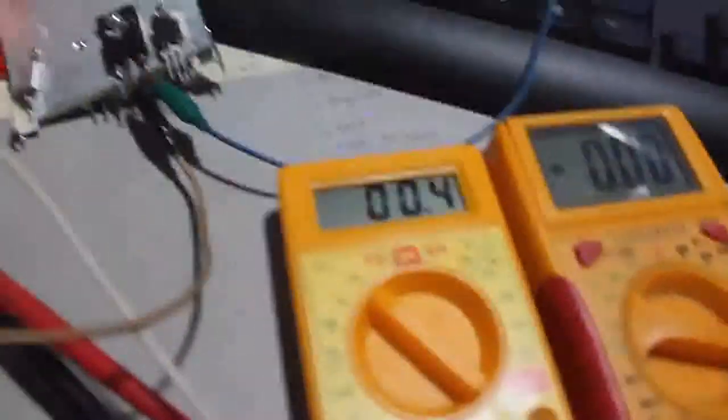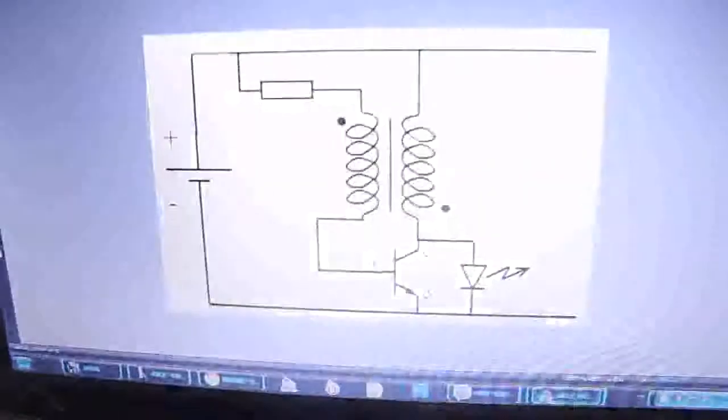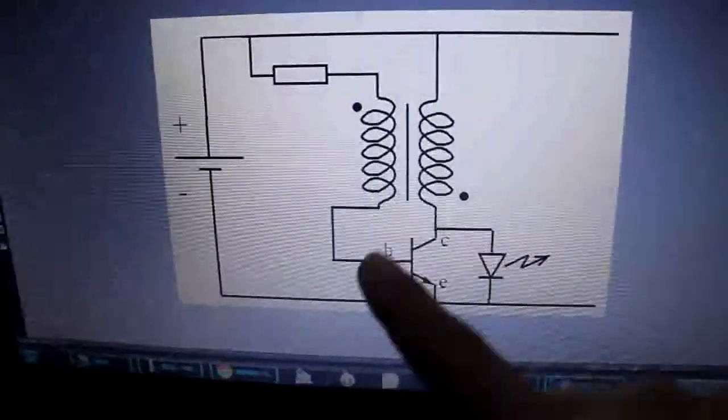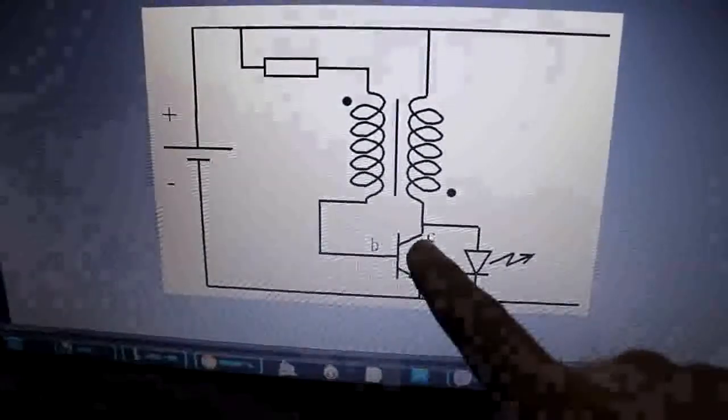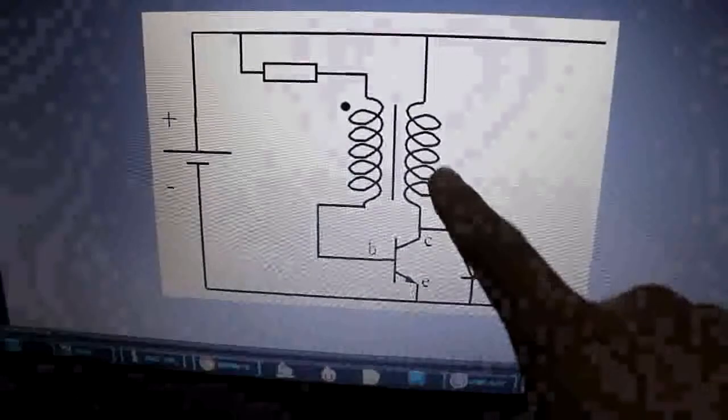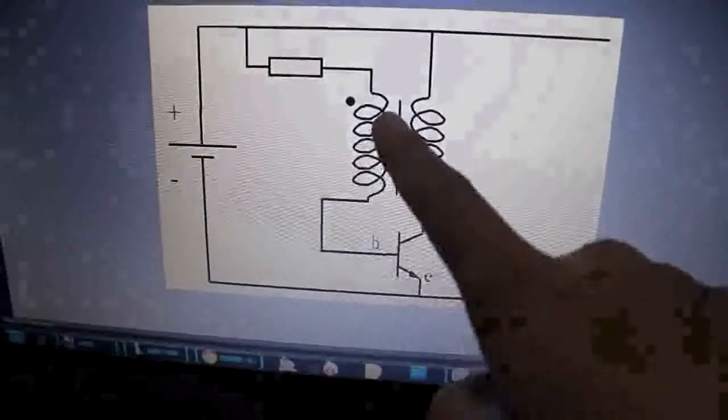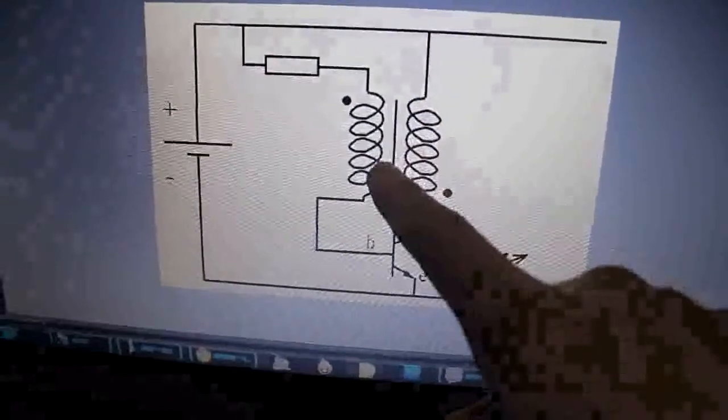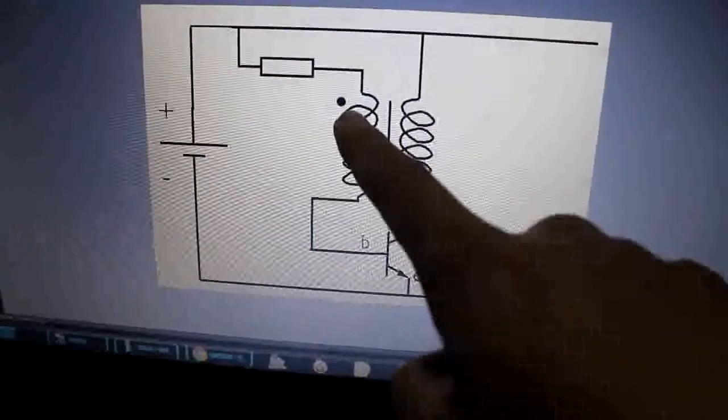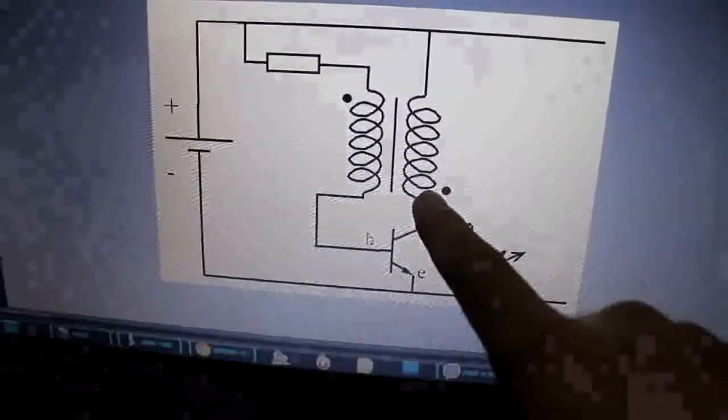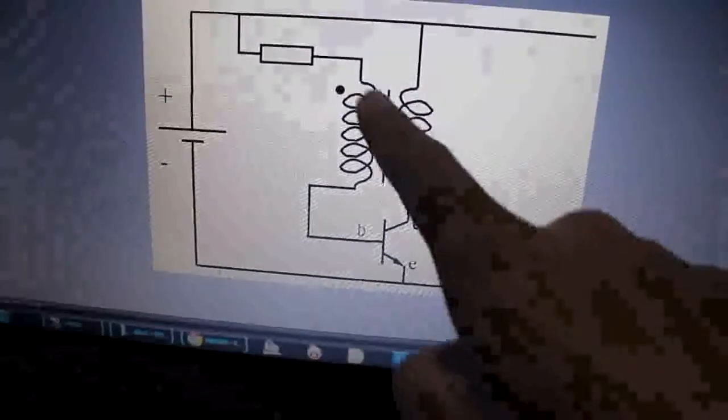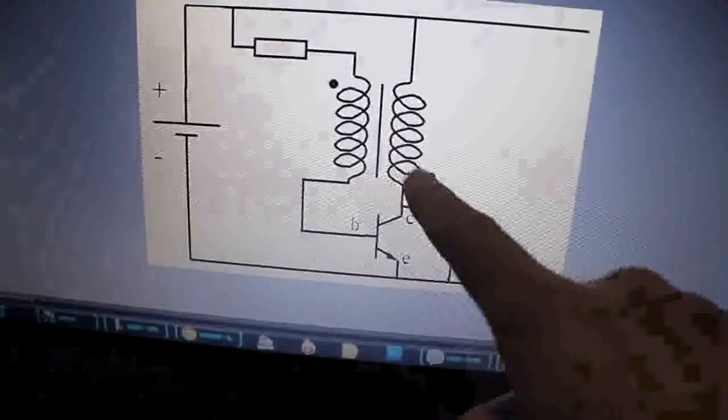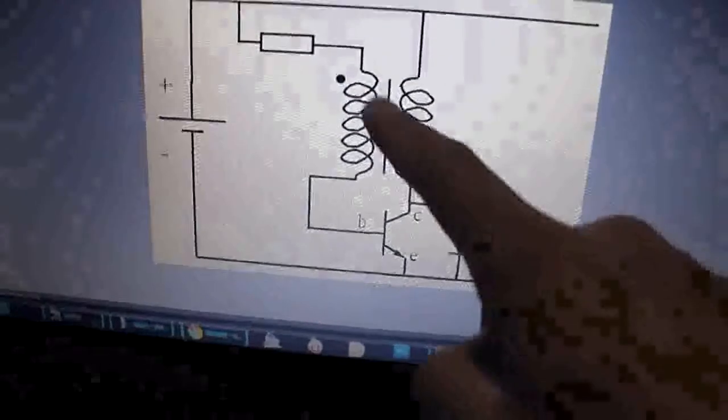So the components of a Joule Thief is over here. This one is a common NPN transistor then it has or it should have two windings here. So this mark and this mark must be on the same start so it should be opposite in connection but it is the same starting.